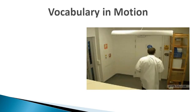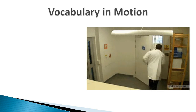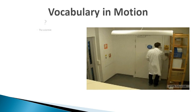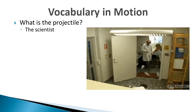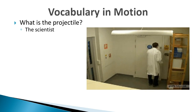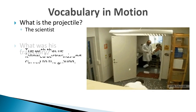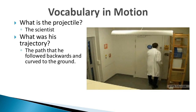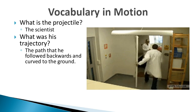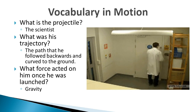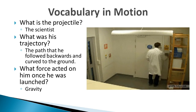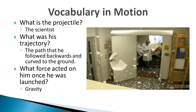Let's look at these vocabulary terms in reference to this gif. We have a man getting hit by an air cannon. The man himself is the projectile — he's the object blasted backwards. He's not pushing himself; the blast of air launches him. His trajectory is the path he followed backwards and curved to the ground. Notice he didn't go straight into the wall — he curved downward. After the air blast, the only force acting on him is gravity. We ignore air resistance.